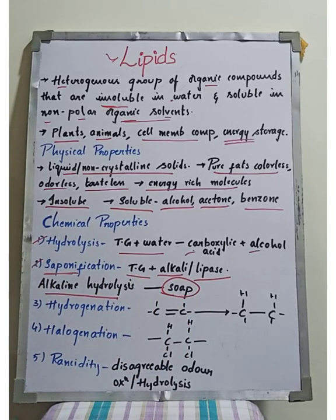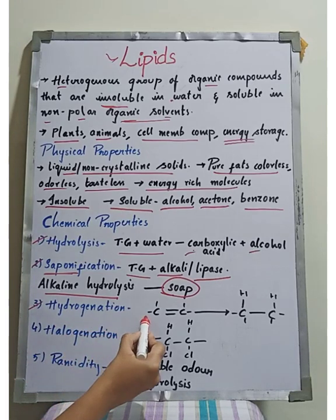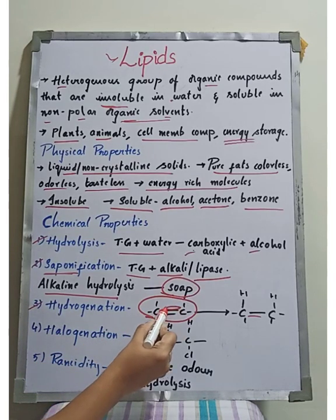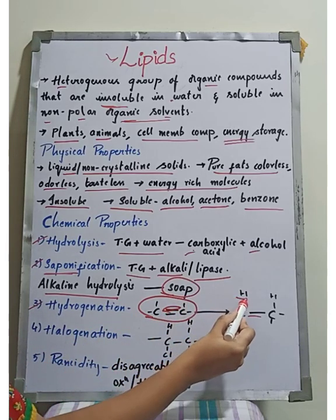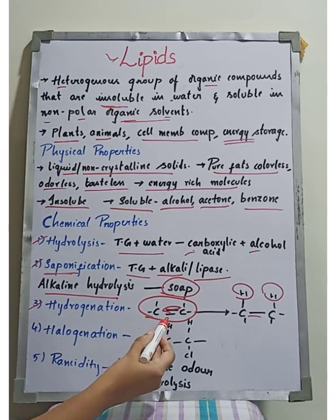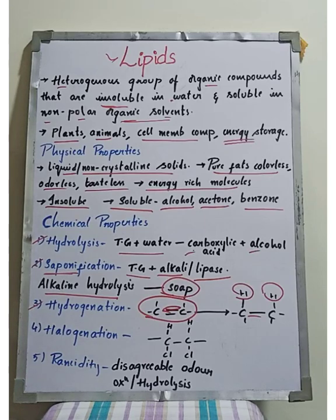The third chemical property is hydrogenation. Hydrogenation is the addition of hydrogen to unsaturated fatty acids. For example, where we have a double bond, that represents unsaturated fatty acids. When a single bond is present, it is a saturated fatty acid. So hydrogenation converts unsaturated fatty acids to saturated fatty acids by adding hydrogen.